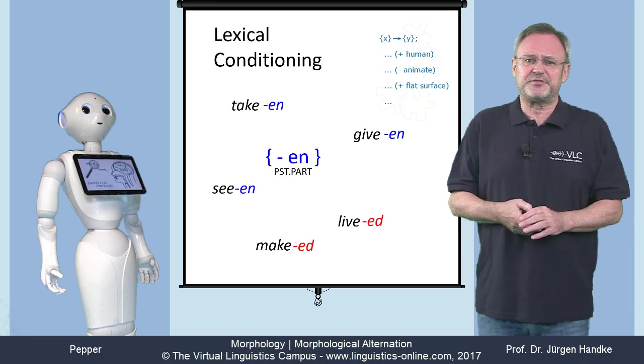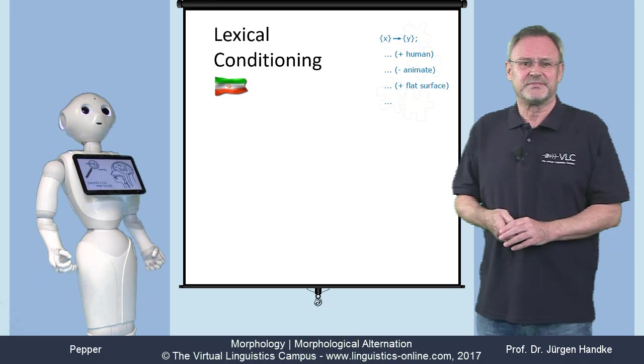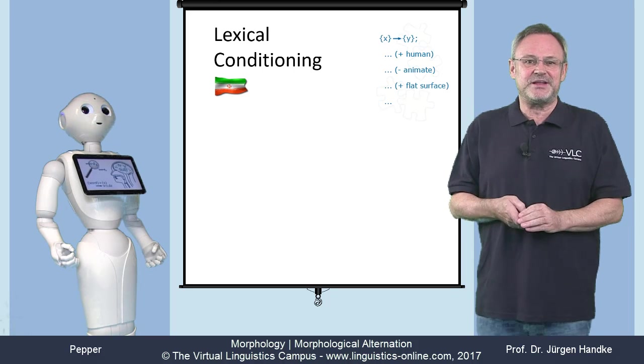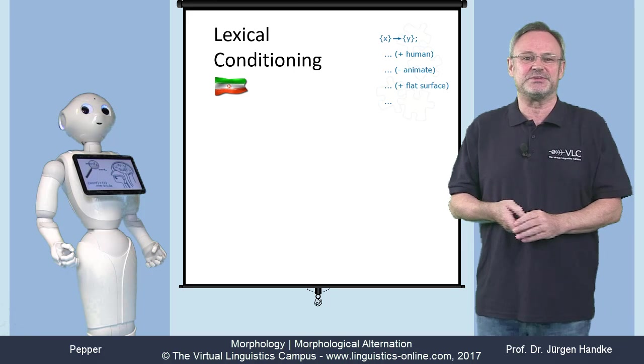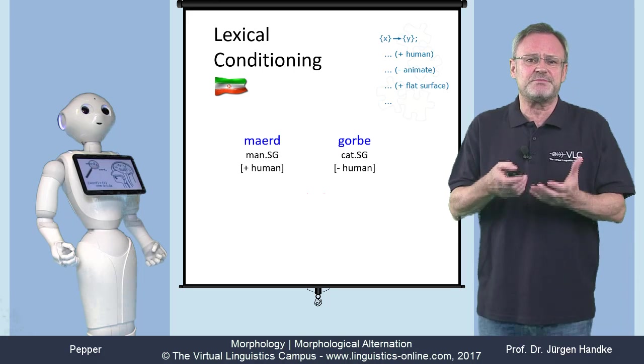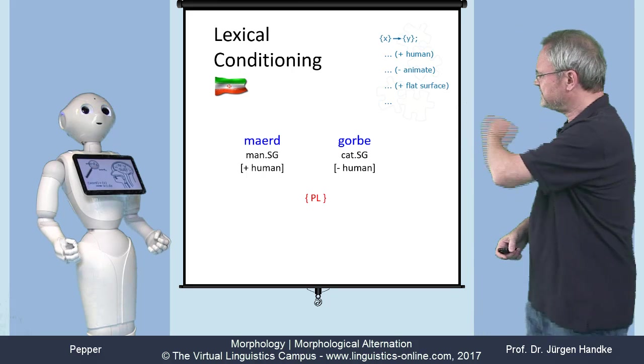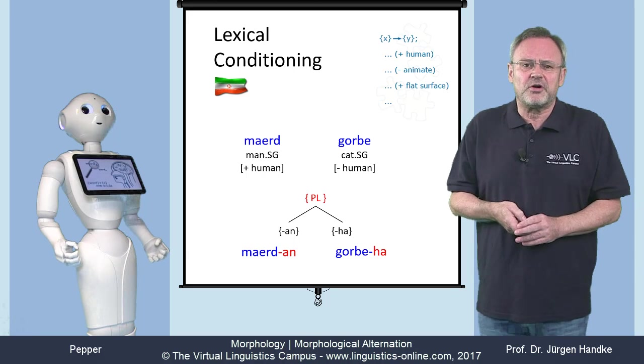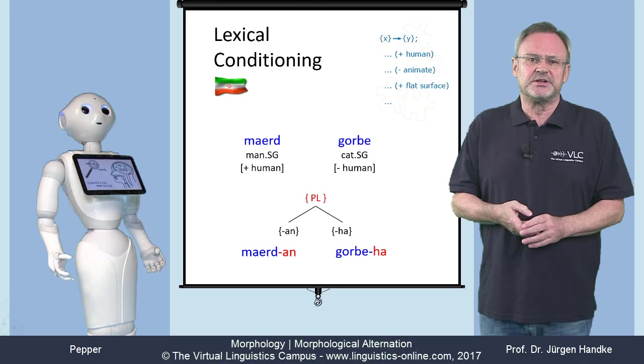Here is an example from Persian. Persian? Another language you speak? No, no, Pepper. As I said, as a linguist, you need not speak many languages, but you should understand the principles of as many of them as possible. And I know that Persian plural marking depends on the semantic properties of the base: human versus non-human, as in these two examples, mardan and gorbeha. Clearly, another case of lexical conditioning.